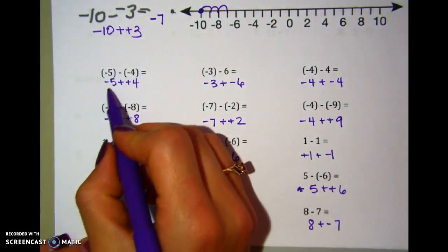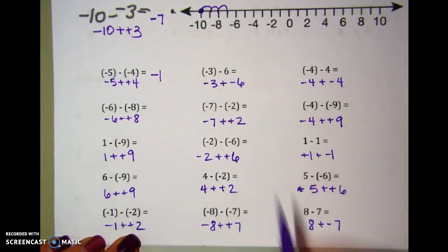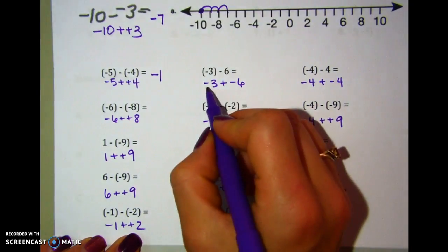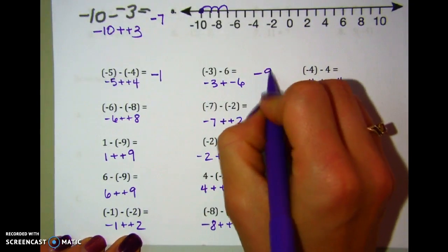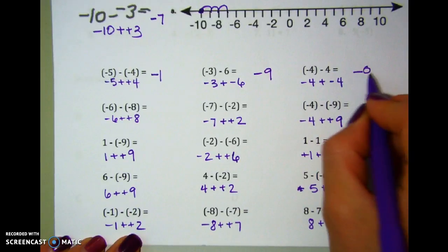So negative 5 plus 4. I'm at negative 5, add 4, but I'm still ending up at negative 1. Negative 3 plus negative 6 combined to make negative 9. Negative 4 plus negative 4 combined to make negative 8.